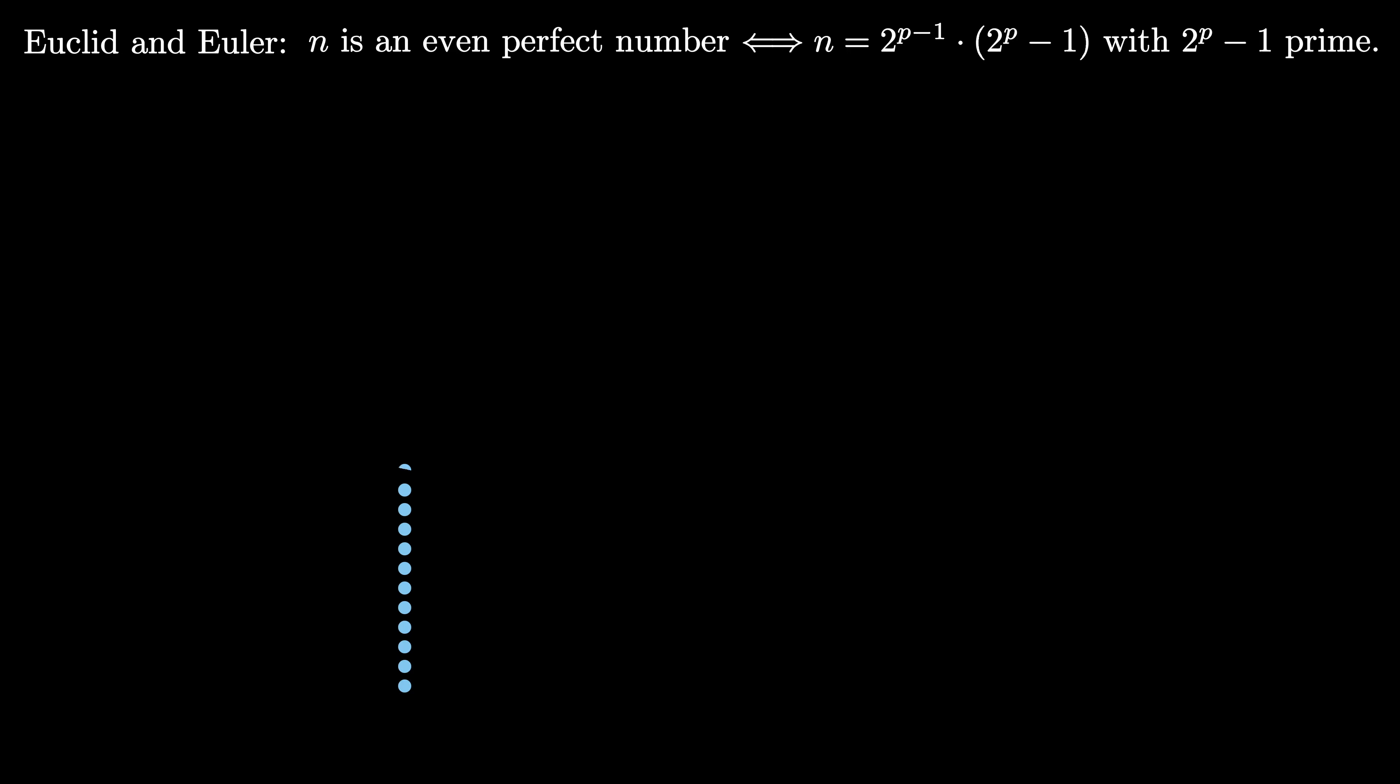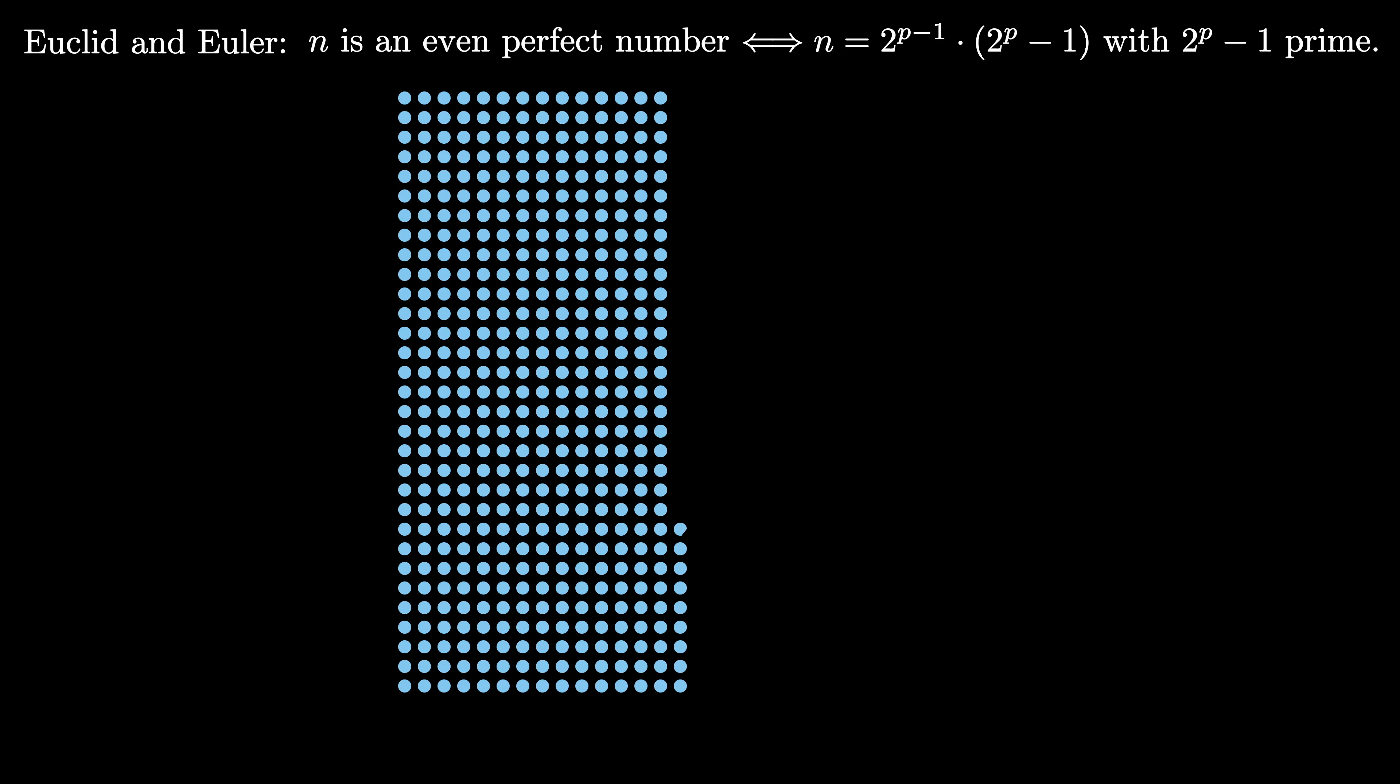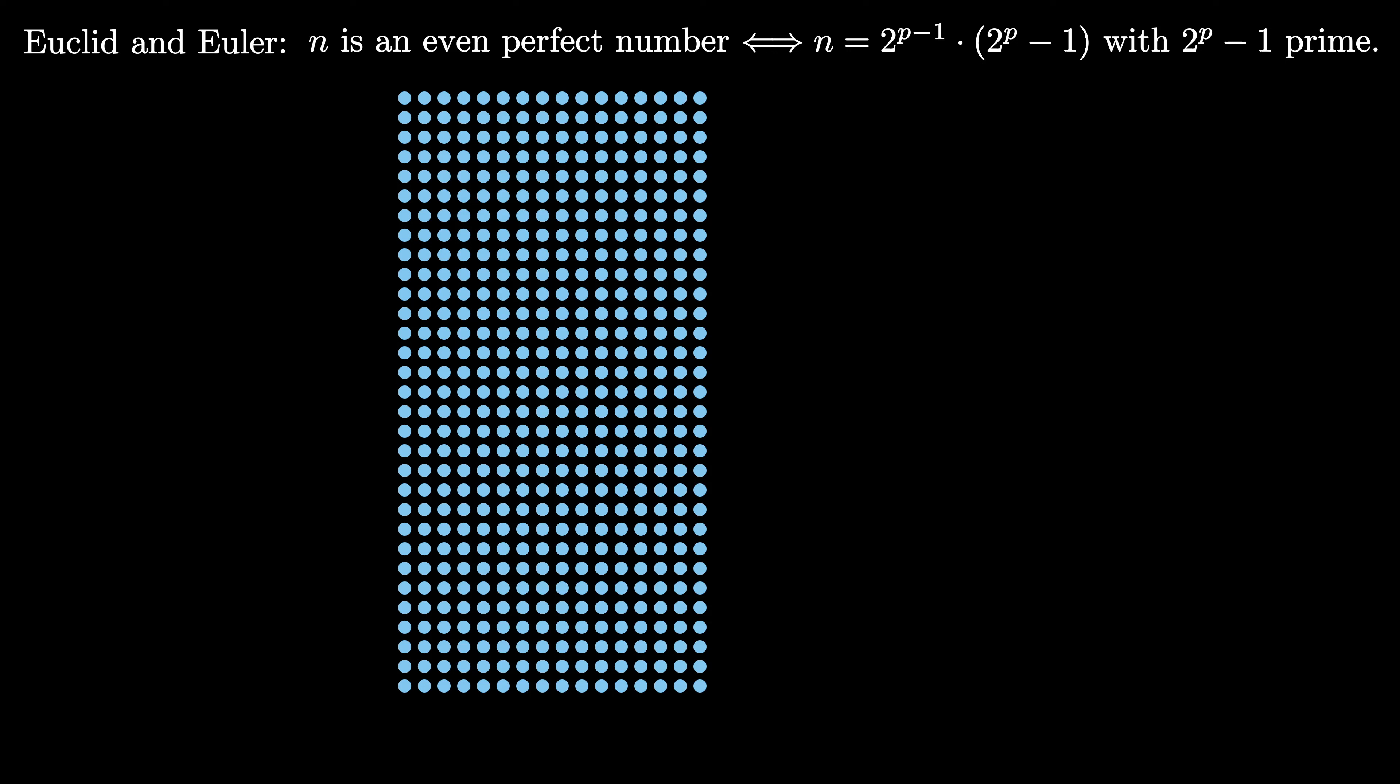According to this theorem, if n is an even perfect number, we can arrange n dots in a rectangle with dimensions 2 raised to the p minus 1 and 2 to the p minus 1. But then the side of length 2 to the p minus 1 can be split into two pieces, one of length 2 raised to the p minus 1, and the other with a length of 2 raised to the p minus 1 minus 1.